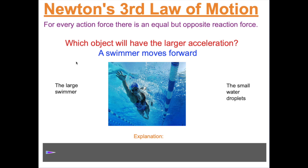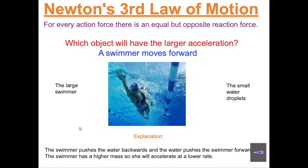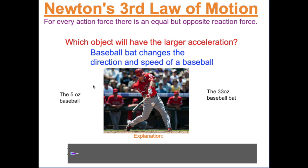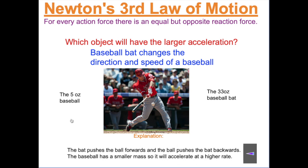In order for a swimmer to move forward, the swimmer must push something backwards. The swimmer pushes water backwards, and the water pushes the swimmer forwards. Which would have a larger acceleration: the large swimmer or the small water droplets? The swimmer has higher mass, so they accelerate at a lower rate. In order for a baseball bat to change the direction of a baseball, there must be a force from the bat on the ball. Which would have a larger acceleration: the 5-ounce baseball or the 33-ounce baseball bat? The 5-ounce baseball — less mass, higher acceleration.